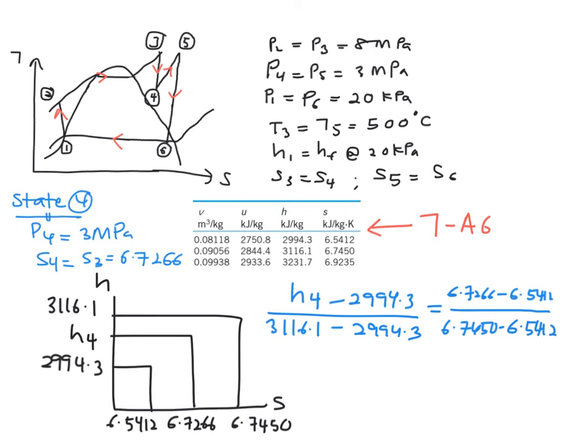Alright, so you will have H4 minus the lower part, the highest value minus the lower part over here, and it must correspond to your S. And finally, you will get your H4 is equal to 3105.1 kJ per kg.